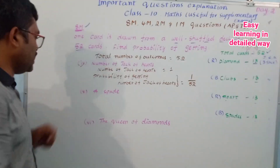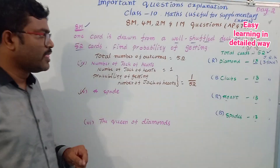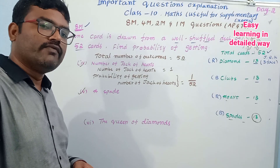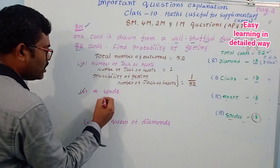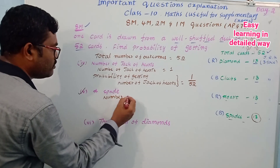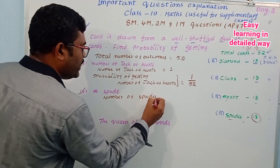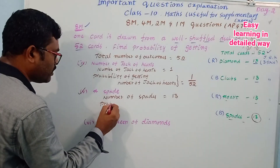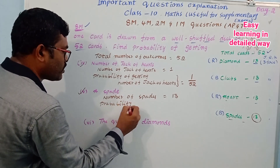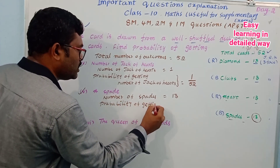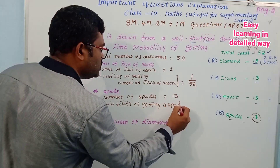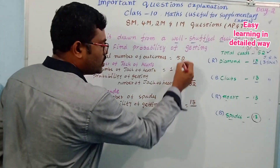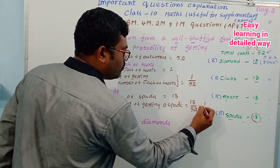Our next, fifth one, is spades. How many spades do you have? 13 spades, so all 13 are favorable outcomes. So probability of getting a spade is equal to favorable outcomes 13 out of total outcomes 52, which is 1 by 4.